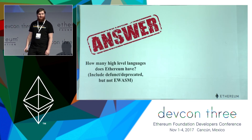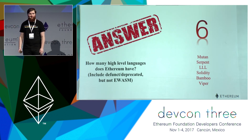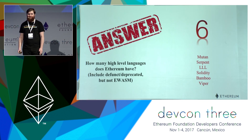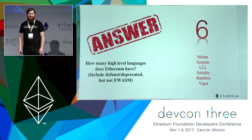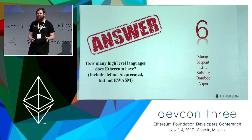The answer to how many high-level languages Ethereum has is six. There's Mutant, a C-like language deprecated around 2015. Serpent and Viper are Python-like languages — Serpent is deprecated. LLL is called either low-level language or Lisp-like language, and it's one of the lowest-level high-level languages we have. There's Solidity, and then a new one called Bamboo, which is supposed to be very safe, written by Yoichi and other community contributors. If I got that wrong, please go online and tell me on Reddit!